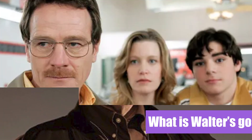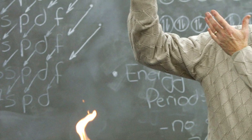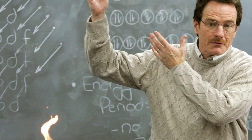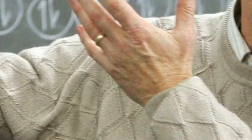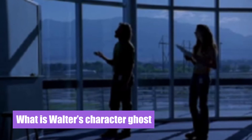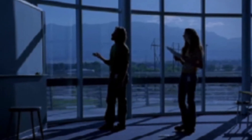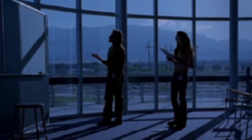His brother-in-law Hank is the antagonist, but really Hank is the hero because he is with the DEA. Walter's goal is to provide for his family and to make sure his family is well off financially. He wasn't making a lot of money as a chemistry teacher, so he starts cooking meth.